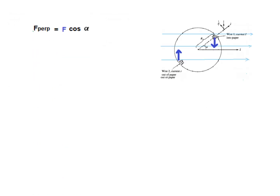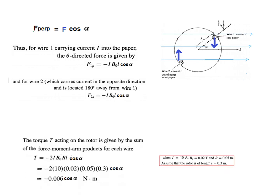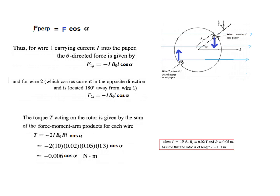Applying the same logic as before — both forces contribute in the same clockwise direction with a negative sign — the torque is again the sum of the two forces multiplied by radius R. Substituting the same parameter values, the torque is now −0.006·cos(α) newton-meters. I hope this gives a clear understanding; this question puzzled me a lot but I'm happy we reached a conclusion.